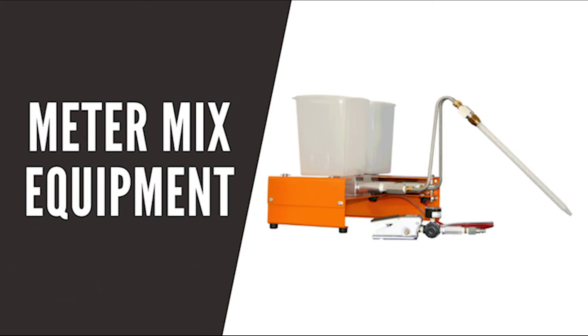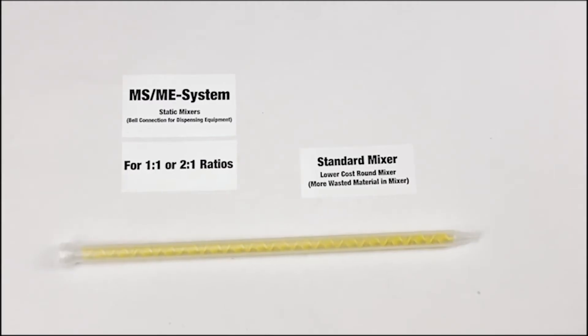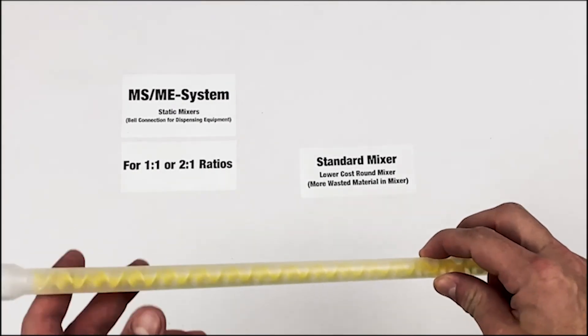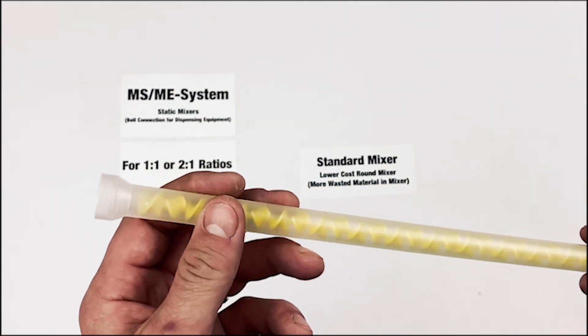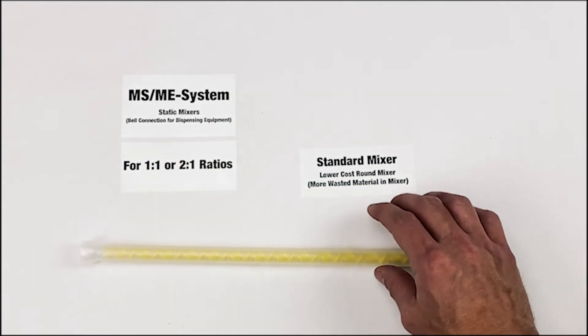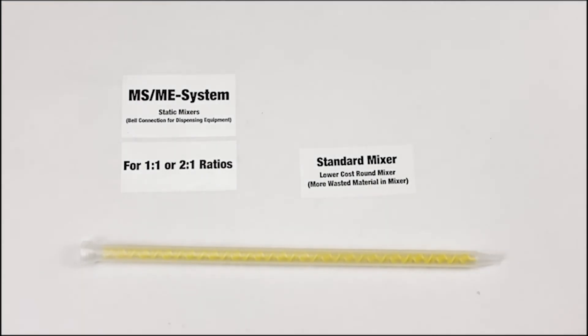Static Mixers for Meter Mix Equipment. For extremely high-volume or metered dispensing applications, often meter mix equipment is used. The two most popular static mixers to use with meter mix equipment are the Sulzer ME and MS style nozzles. The main difference between the MS and ME series is the MS series has a wider nozzle diameter for higher viscosity materials.